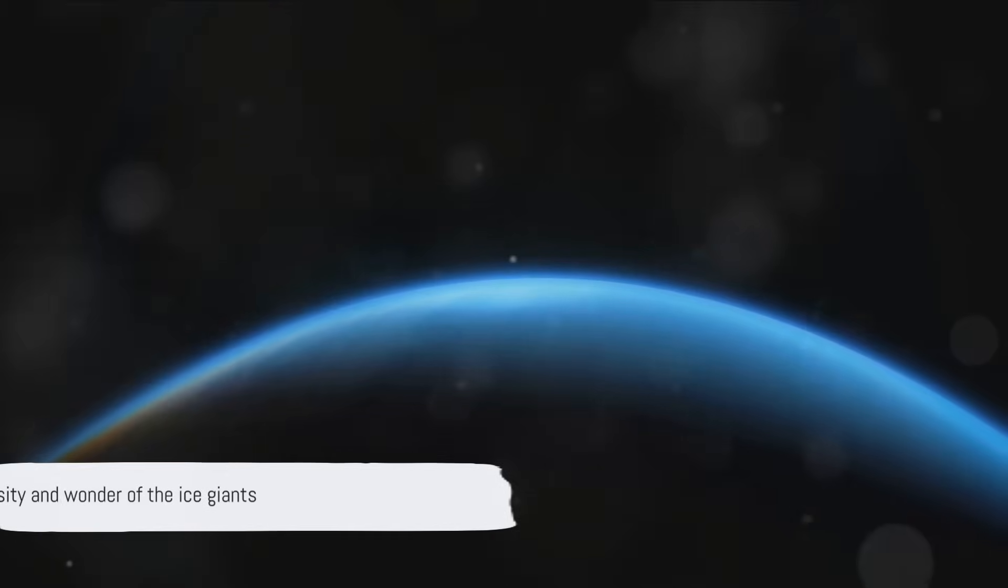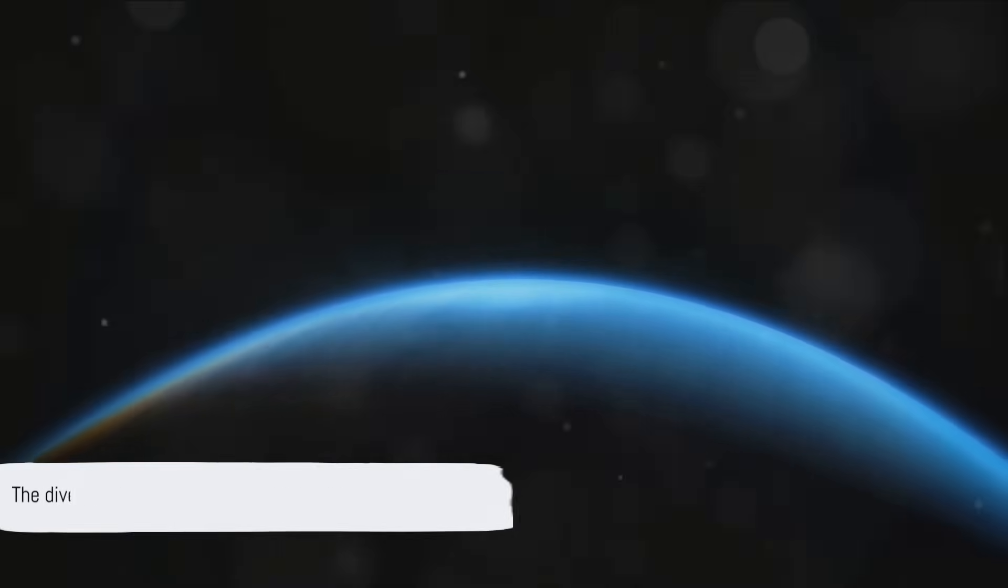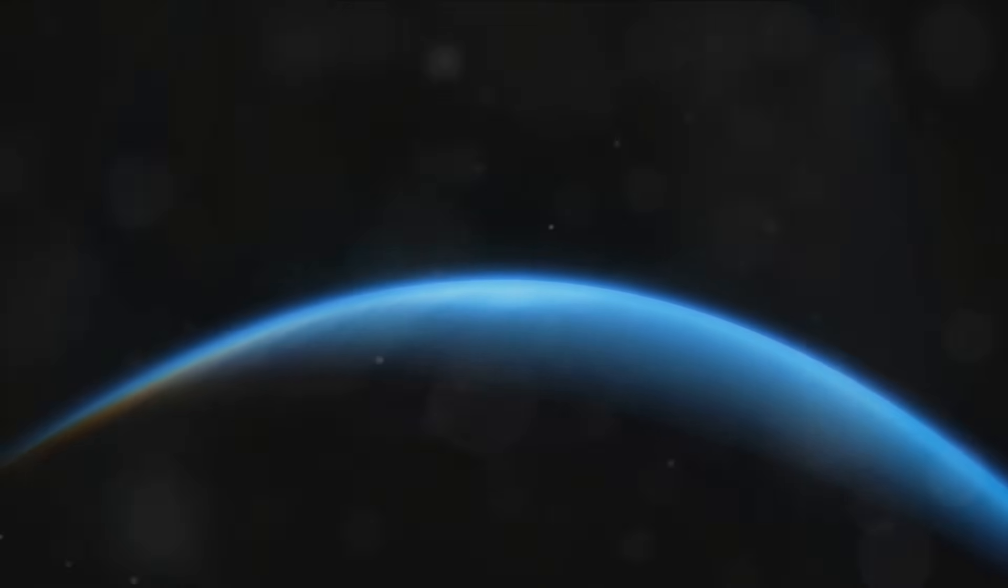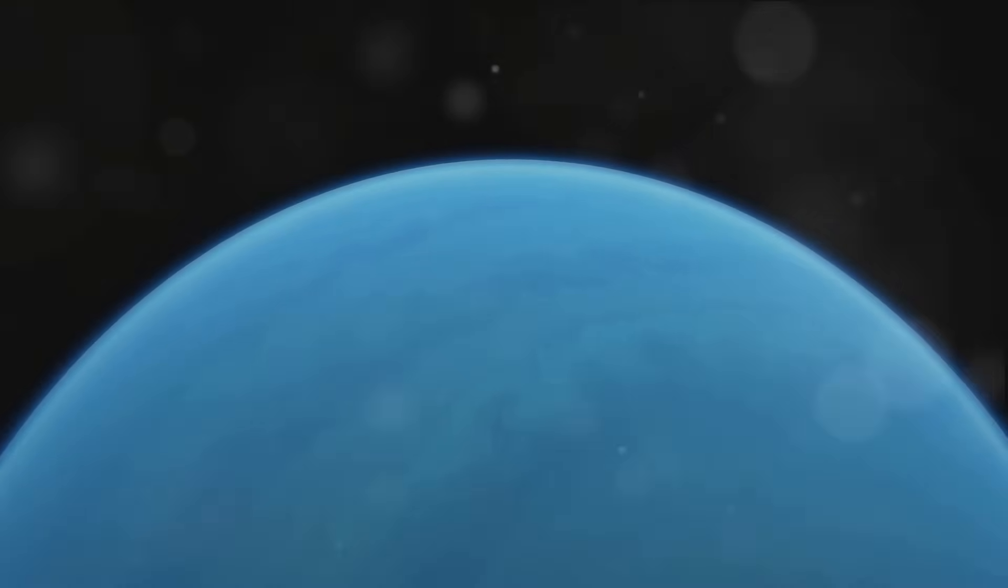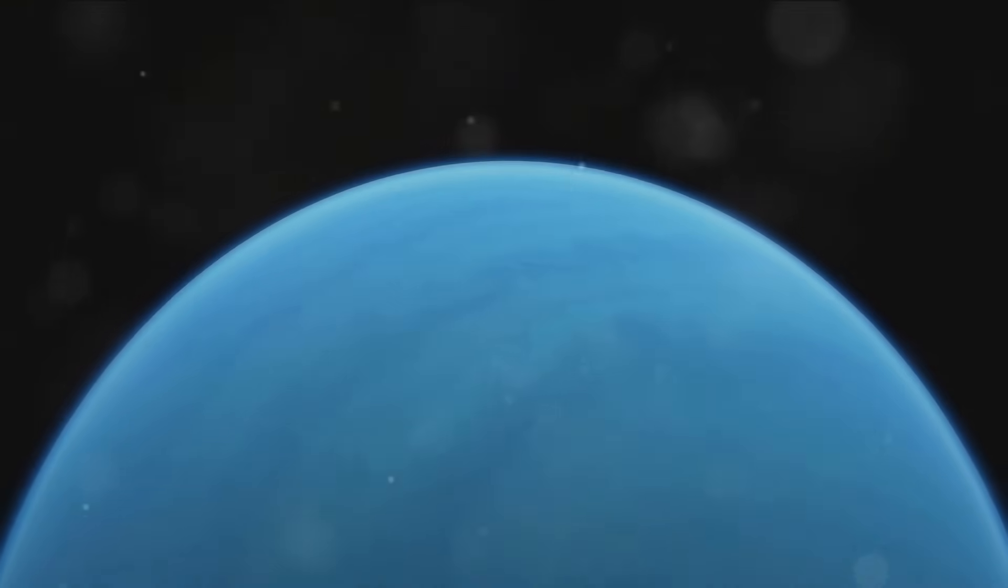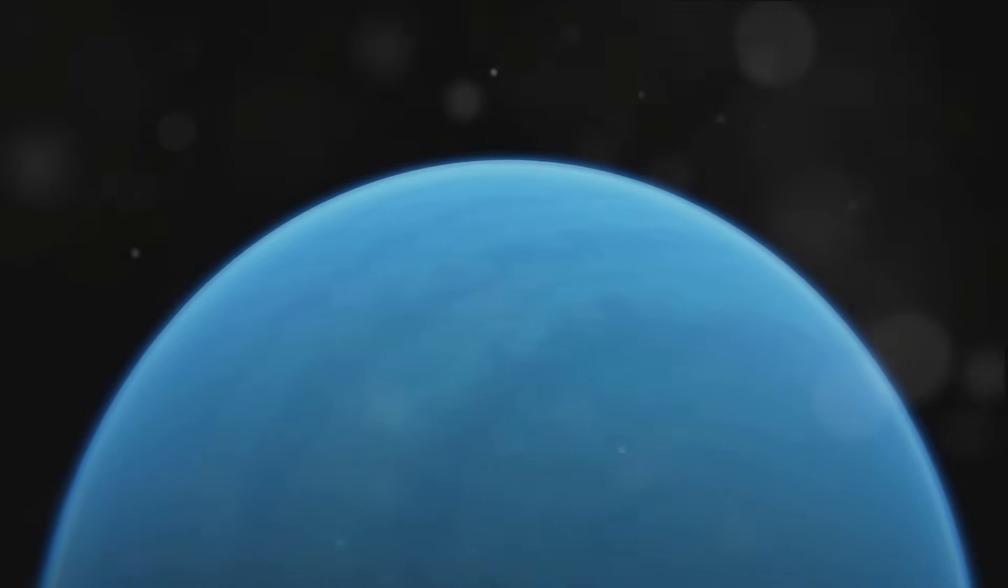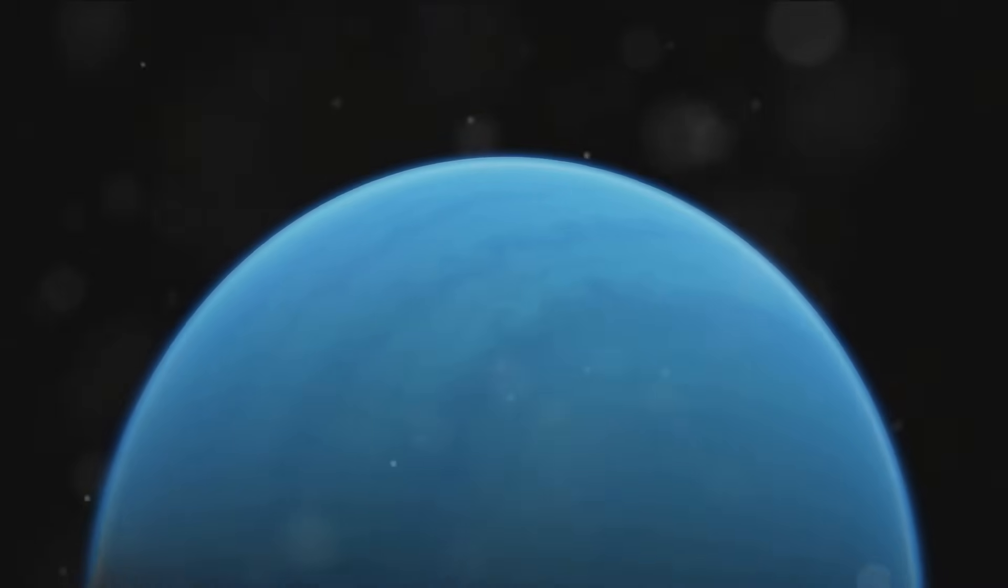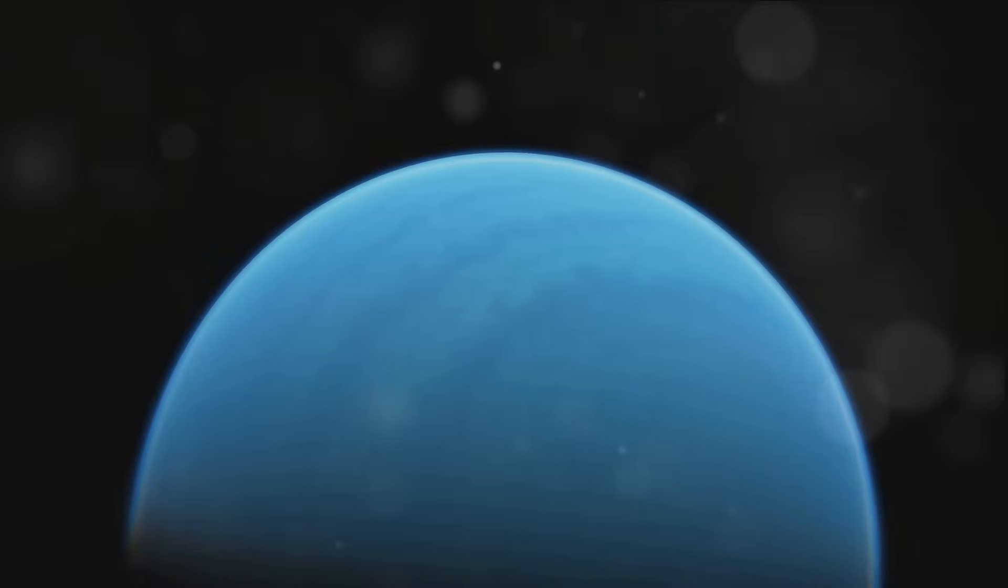From the sideways spin of Uranus to the extreme winds of Neptune, the ice giants of our solar system are as fascinating as they are distant. They remind us of the sheer diversity and wonder that exists within our cosmic neighborhood. From the far reaches of Neptune, we end our tour of the solar system.